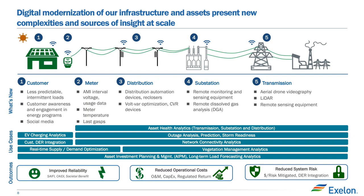Maybe you can describe some of the use cases that Exelon's programs are tackling now and in the future. We came up with this picture two years ago. When we talk about our Grid T&D scope, with AMI meters, reclosers, DA devices, and all sorts of sensors, we now have a lot more data. The grid T&D scope is about taking SCADA data which we had for the transmission side and bringing in similar high-resolution data for the distribution side. We have a big portfolio of analytics to improve reliability, reduce operational costs, and reduce system risk.